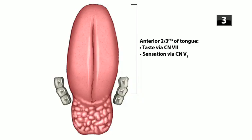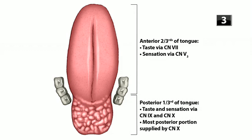The last question: describe the sensory innervation of the tongue. The anterior two-thirds are innervated by the facial nerve (CN VII) for taste, and by the trigeminal nerve (CN V3) for general sensation. The posterior third is innervated by the glossopharyngeal nerve (CN IX), and the vagus nerve (CN X) supplies the most posterior portion.